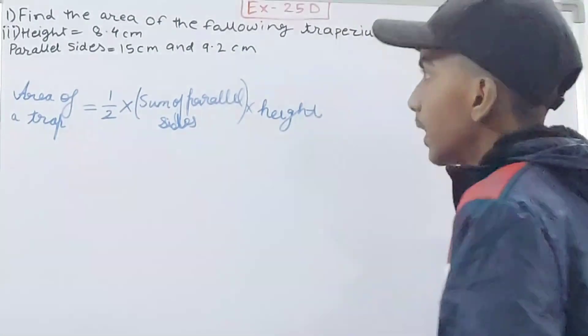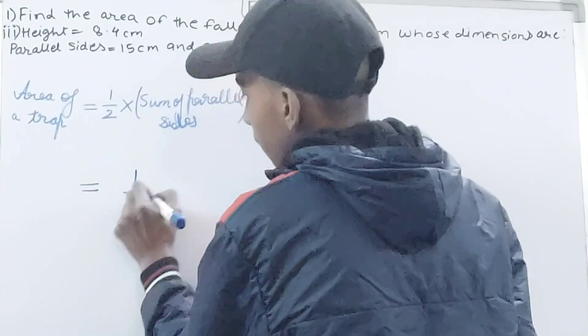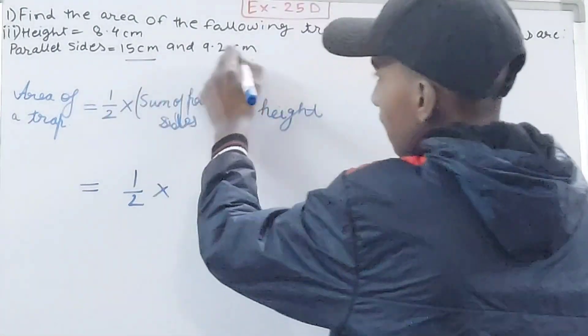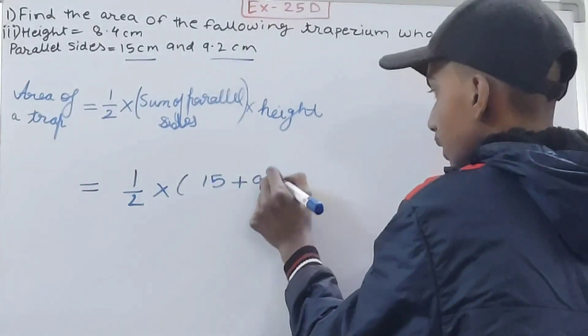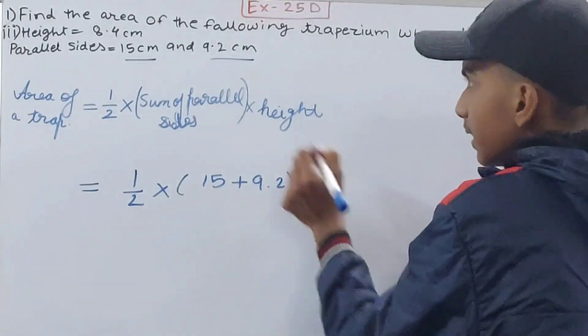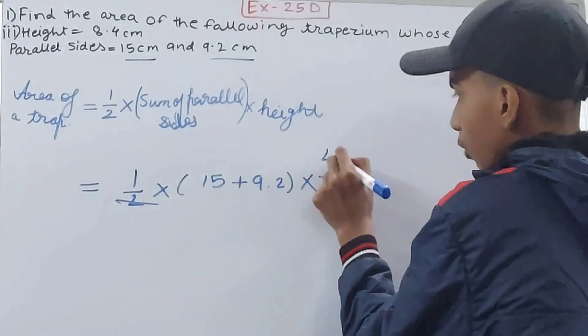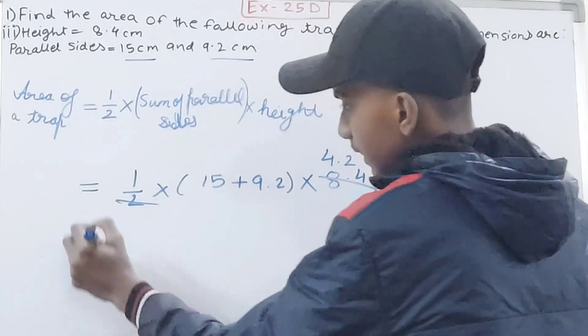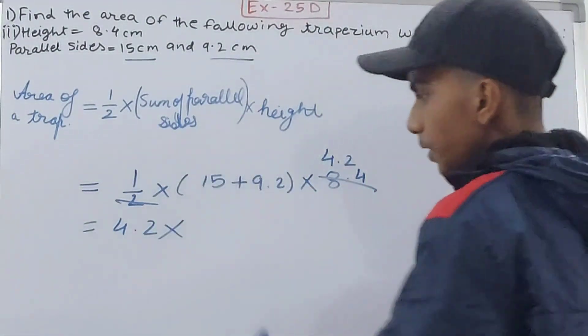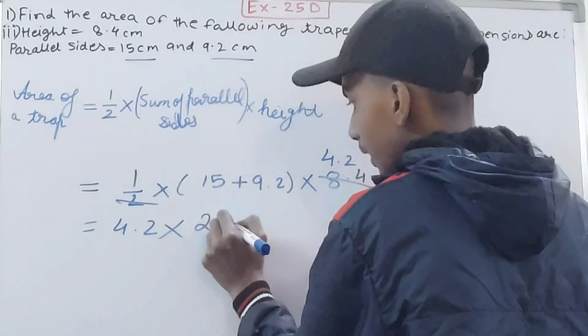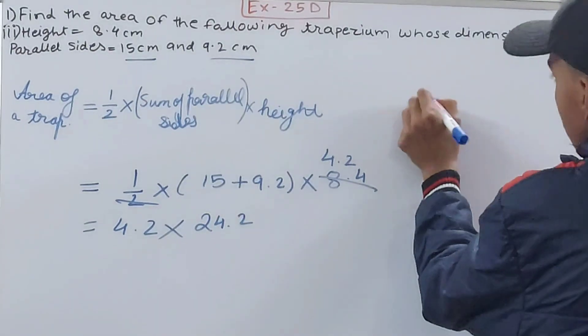Now see the next one here. We again have height and the parallel sides given. 1/2 into sum of parallel sides, one is 15, another is 9.2, so 15 plus 9.2, multiply this by height that's your 8.4. Let's cancel this and this, so you'll have 4.2. I am canceling it by 2, so 4.2 into 15 plus 9.2 is 24.2.